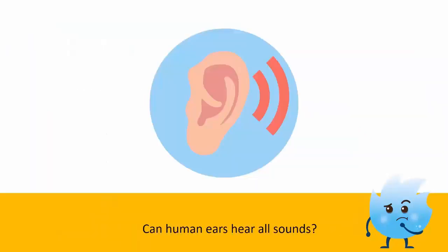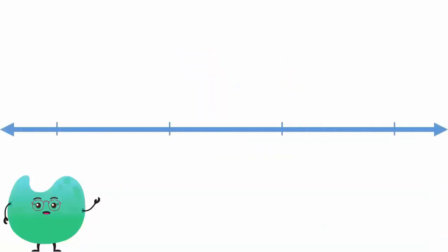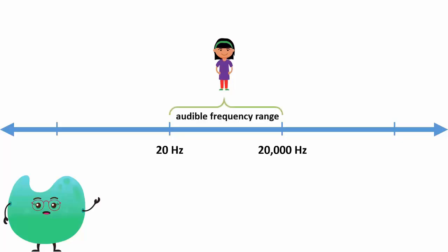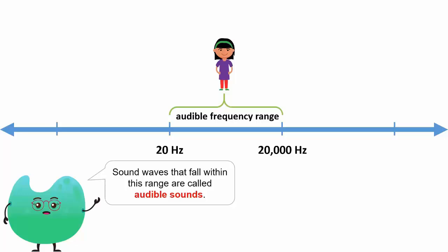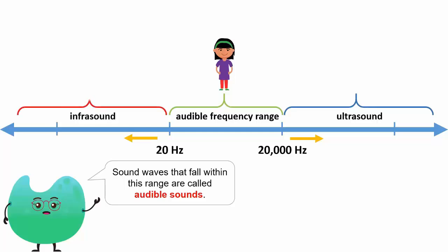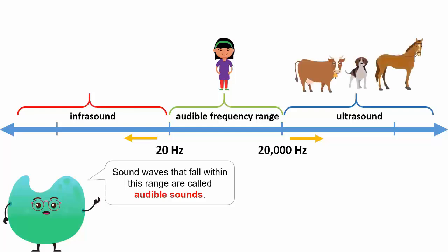Can human ears hear all sounds? An average human can hear a sound only if its frequency lies between 20 Hz and 20,000 Hz. These frequencies are called audible frequencies, and the sound waves that fall within this range are called audible sounds. Sounds of frequency below 20 Hz and beyond 20,000 Hz are inaudible to the human ear. Sounds above 20,000 Hz are called ultrasound, while sounds below 20 Hz are called infrasound. Animals such as cows, dogs, and horses can hear ultrasounds, and a few animals such as elephants can also hear infrasound.